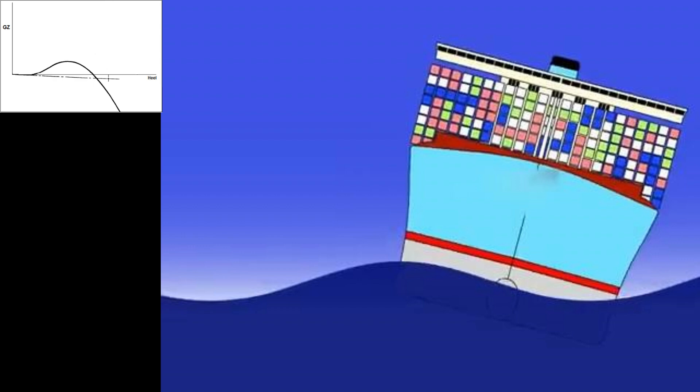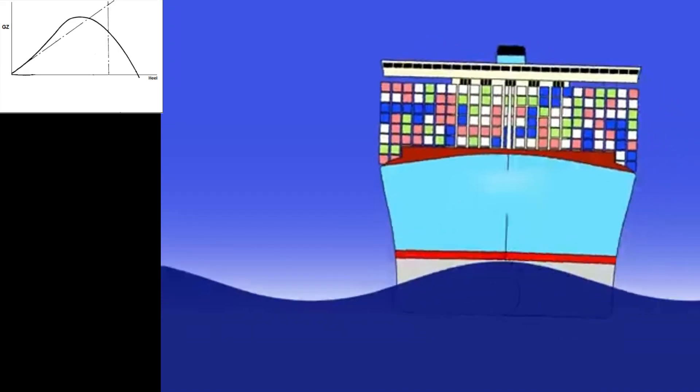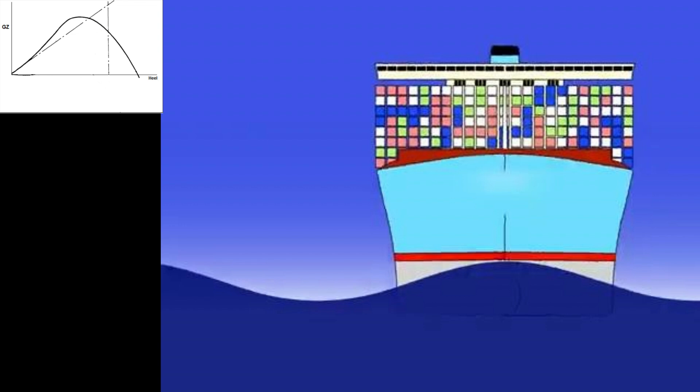Then, when the wave trough reaches midship, the water plane area increases. This increase in water plane area leads to a larger GZ, and the ship will return to the upright with an increased roll motion, since there was an additional restoring from the increased GZ.